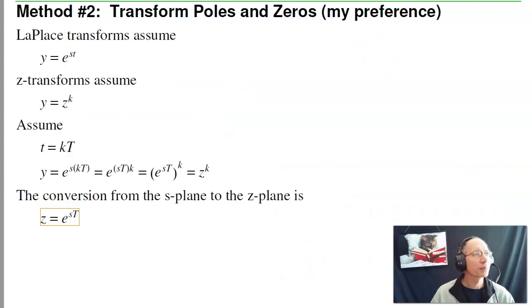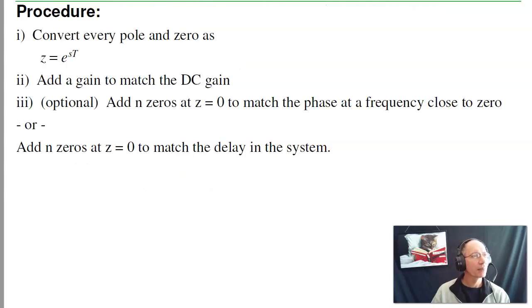Third option. This is the approach that I really prefer. It uses the relationship between the S-plane and Z-plane. The relationship is z = e^(sT). So if I have three poles in the S-plane, I have three poles in the Z-plane. The conversion from S-plane to Z-plane is e^(sT). So I'll take each pole and convert it. I'll then add a gain to match the DC gain. And optionally, to get the delay right, add a bunch of zeros at z equals 0.